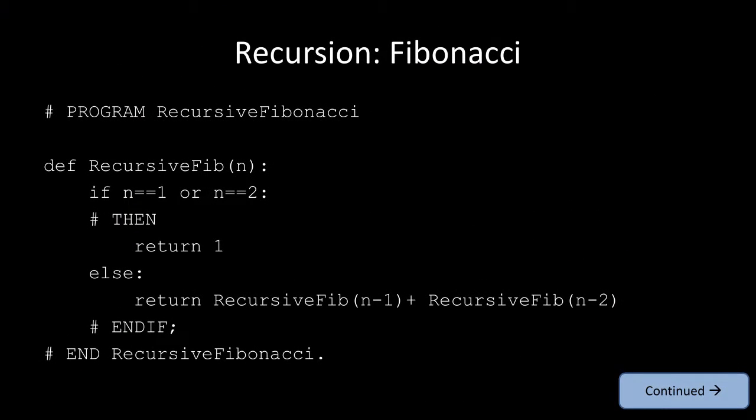If I want to implement a recursive version of the Fibonacci sequence in Python, I declare a method by saying def recursive_fib, and then check if the value input is either 1 or 2. The first Fibonacci number is 1, the second is 1, then 2, 3, 5, 8, 13, and so on. If the input gives Fibonacci number 1 or 2, I just return 1. Otherwise, I return the sum of recursive_fib(n minus 1) and recursive_fib(n minus 2), which is exactly the definition of Fibonacci — the sum of the previous two numbers.